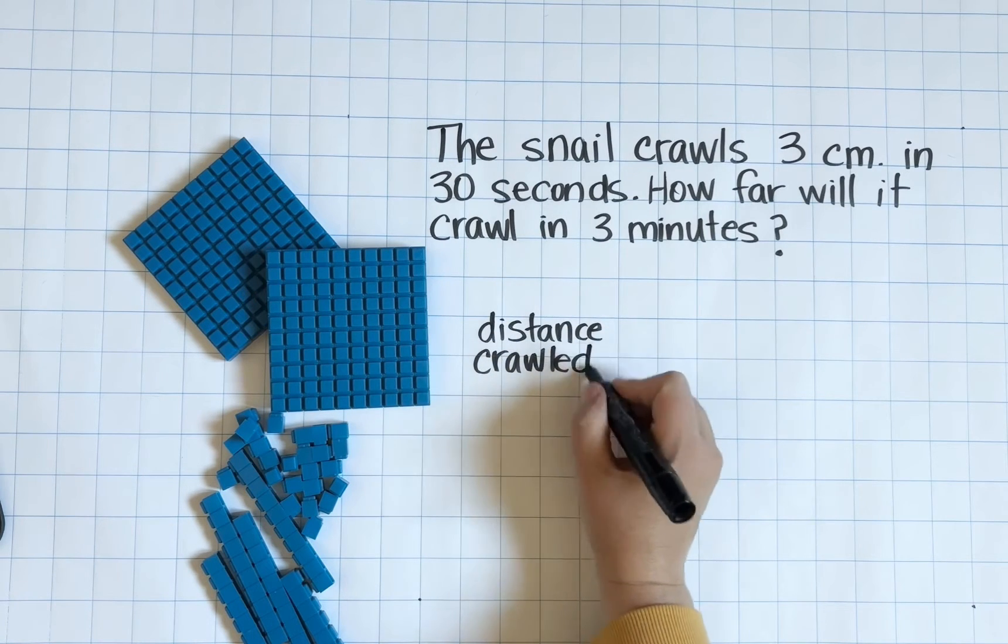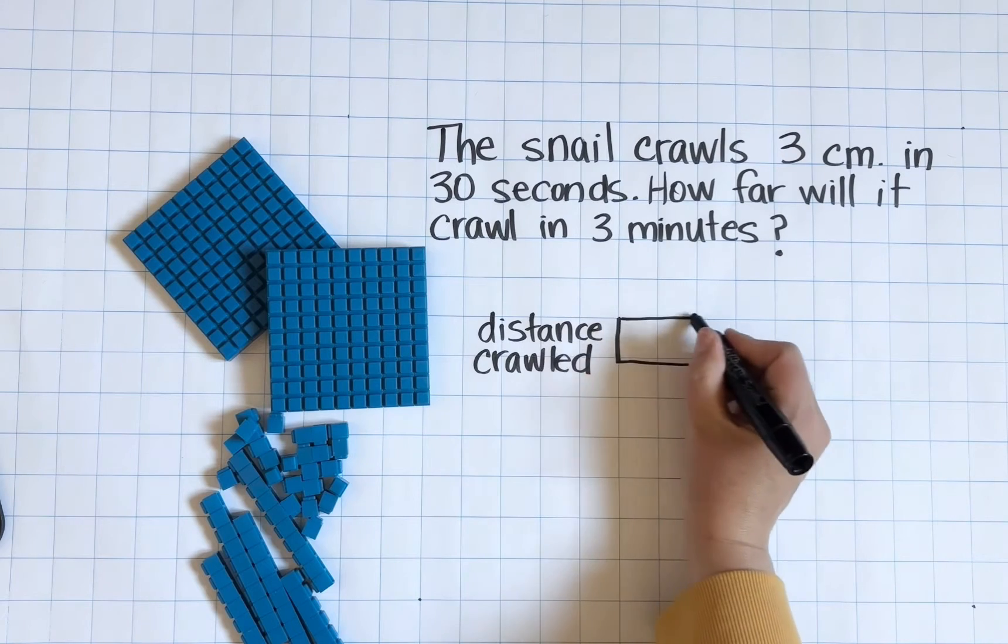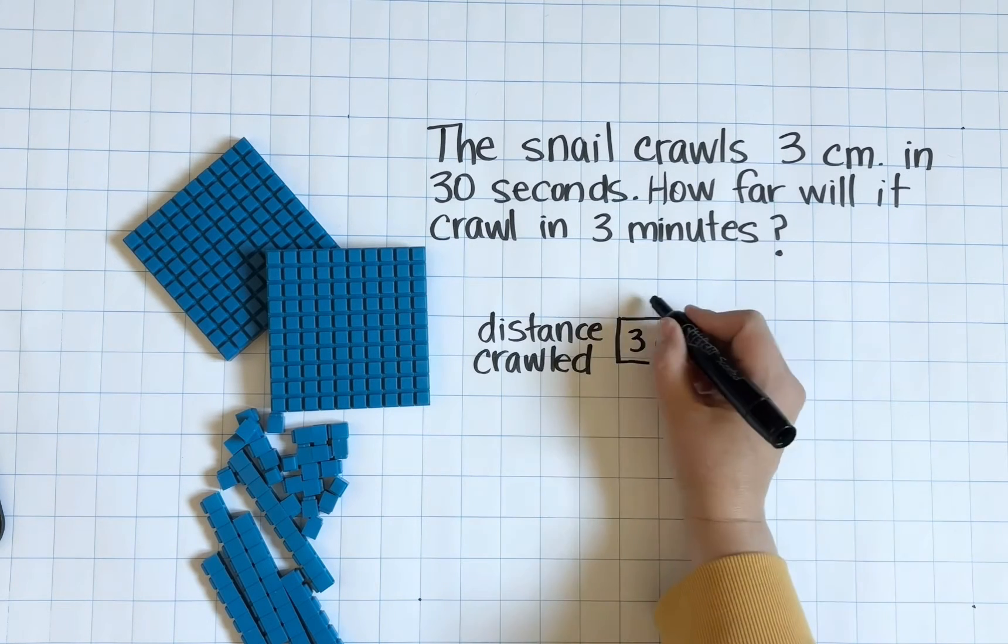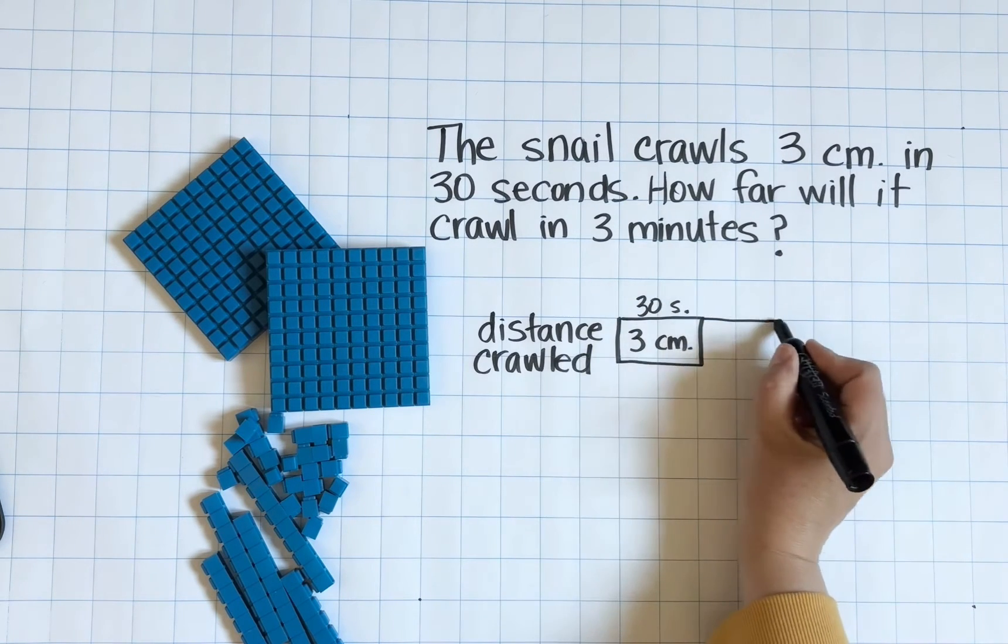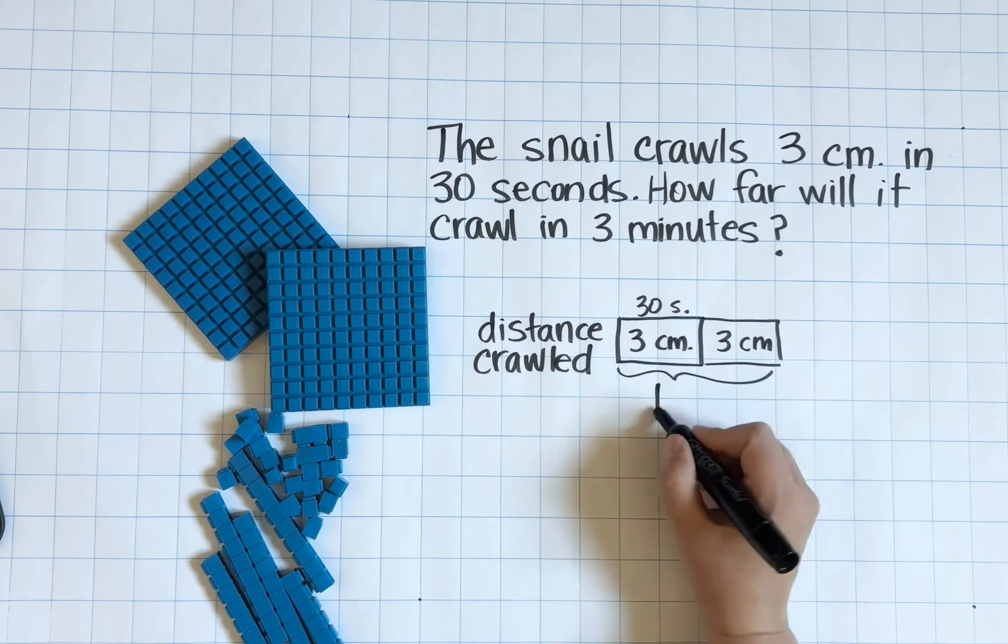Let's take a look at what this might look like as a bar model. I'm going to label my model distance crawled and I know that each part of my model represents 30 seconds and also three centimeters.